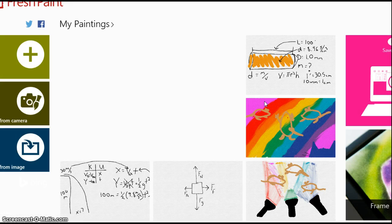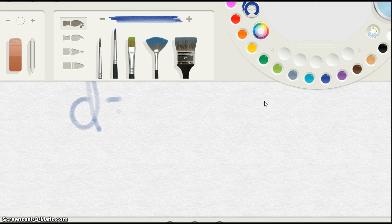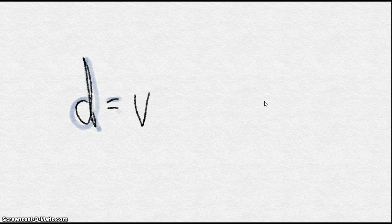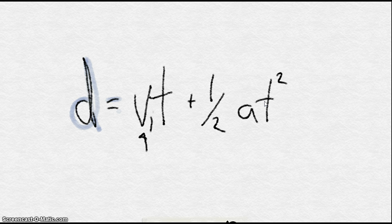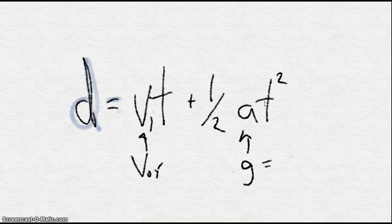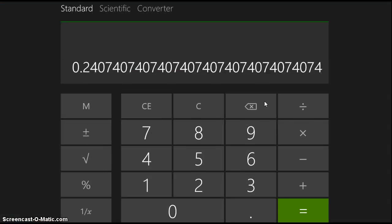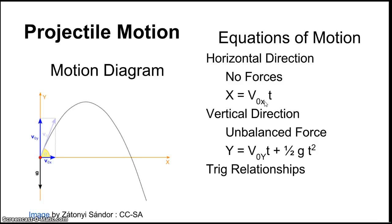In the vertical direction there is an unbalanced force — weight — so there is acceleration. The equation governing vertical position is: y = V₀ᵧ · t + ½at², which is the same form as d = Vᵢt + ½at². Here V₀ᵧ is the initial speed in the y direction, and 'a' equals the acceleration of gravity, 9.8 meters per second squared. The variable y represents displacement in the vertical direction.